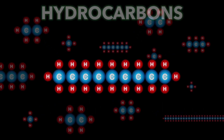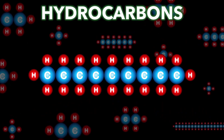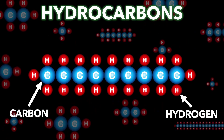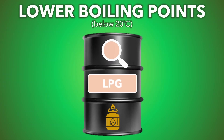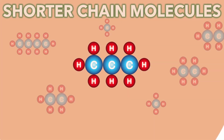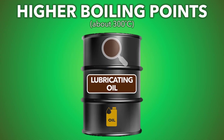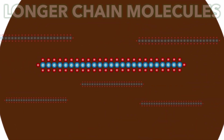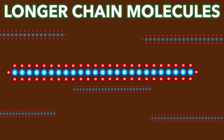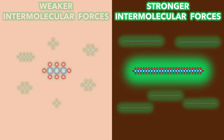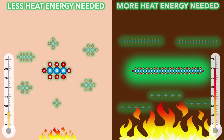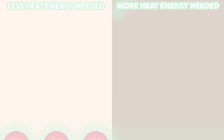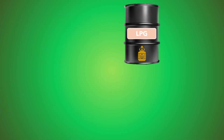Crude oil is a mixture of hydrocarbons — chains of carbon and hydrogen atoms. Fractions with lower boiling points contain shorter chains, and fractions with higher boiling points contain larger chains. This is because bigger molecules have stronger intermolecular forces than smaller ones, so more heat energy is needed to break the bonds and turn them into a gas.